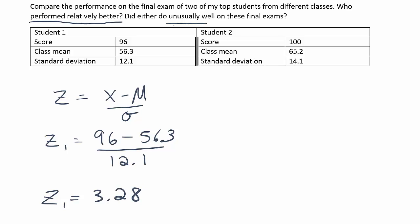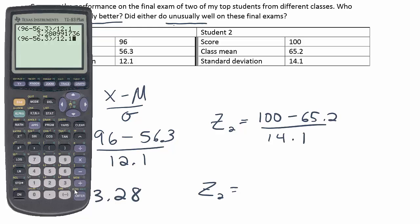So the first student's z-score is 3.28. All right, let's take a look at student two. She scored a perfect 100. So her x value is 100. The mean for her class was 65.2 and the standard deviation was 14.1. Okay, let's go ahead and calculate that z-score. So I'm actually going to just bring up that calculation that we had before and type in the new numbers. So 100 minus 65.2, close up that, divide by 14.1. And when we do that, we get the answer 2.47, another impressive z-score.